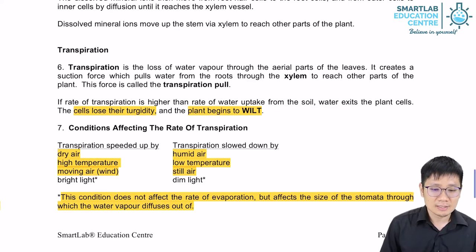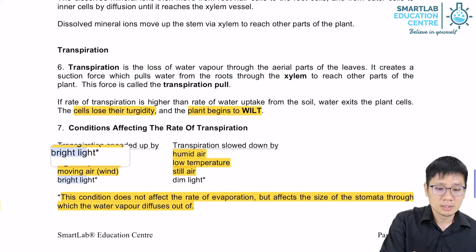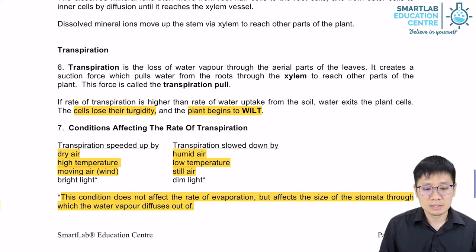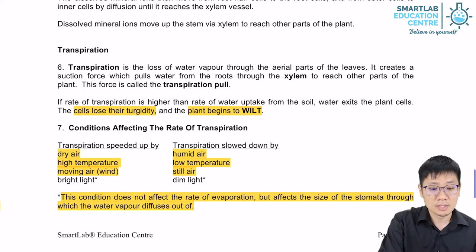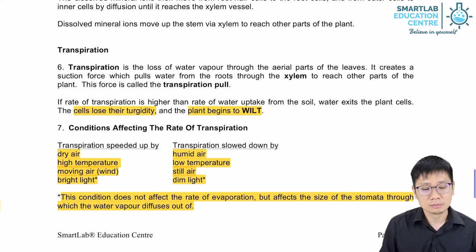If there is bright light, transpiration rate will be sped up. If there is dim light or if there is no light, transpiration rate is slowed down.